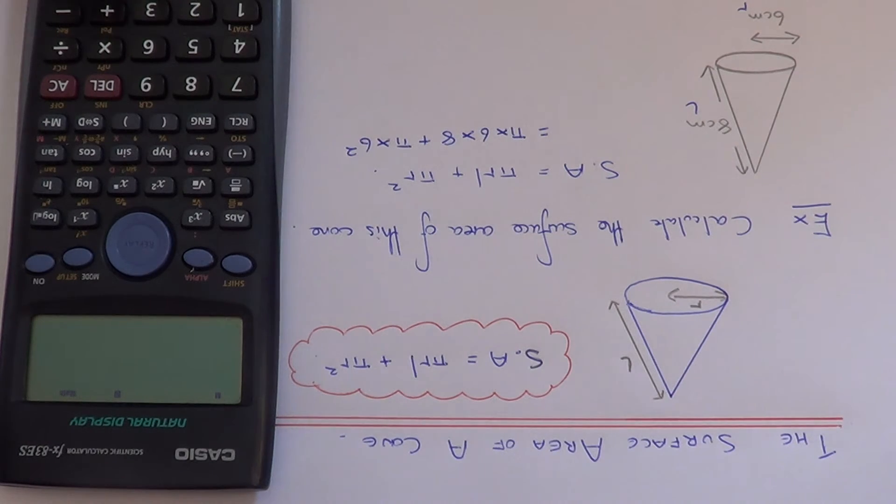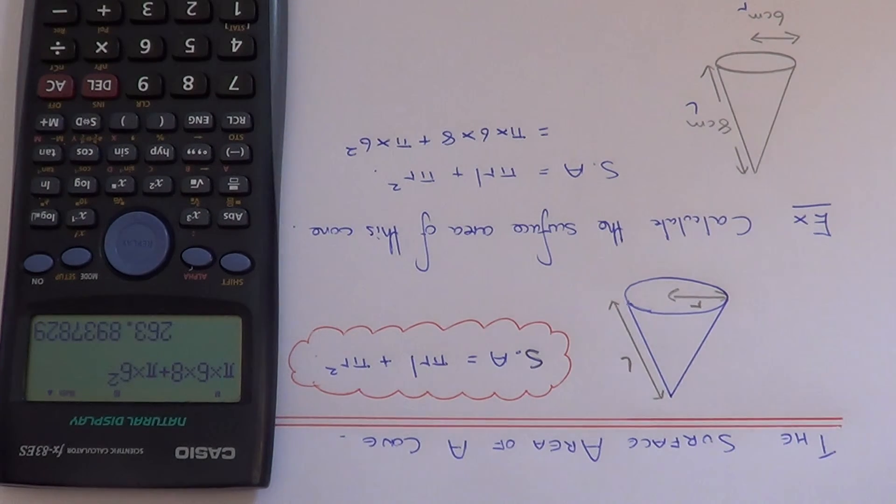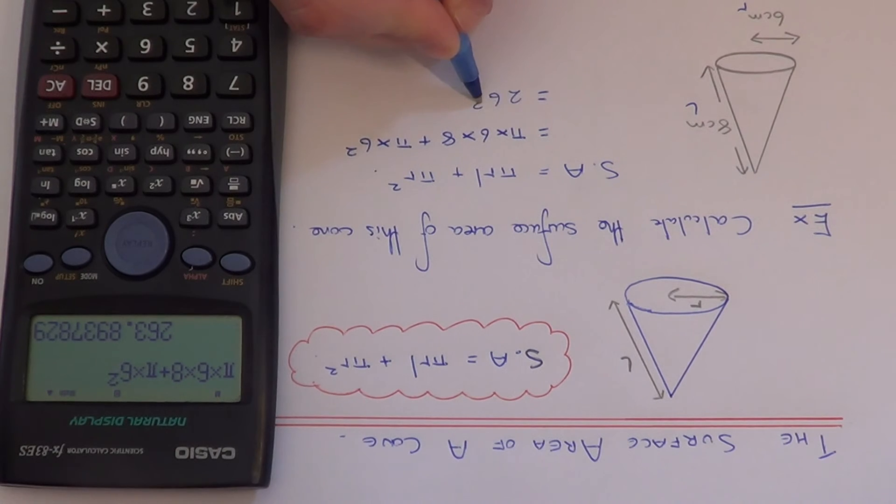Hit your equals and if we round this one off to one decimal place, we get 263.9 centimeters squared.